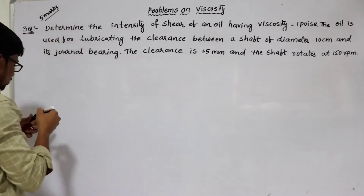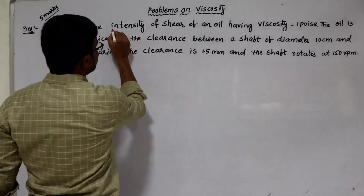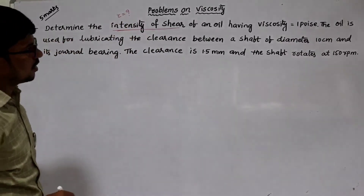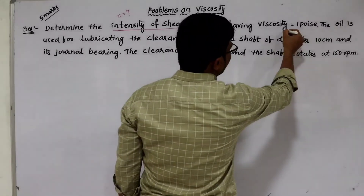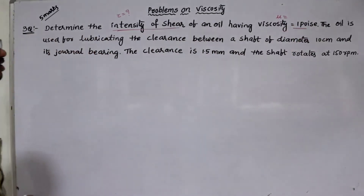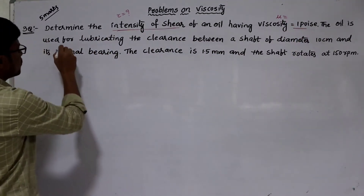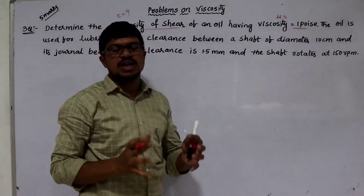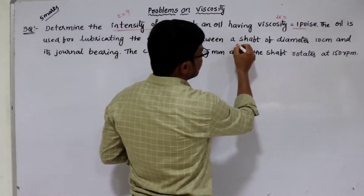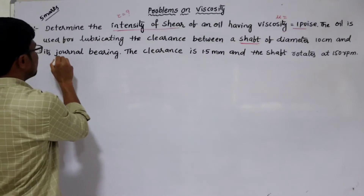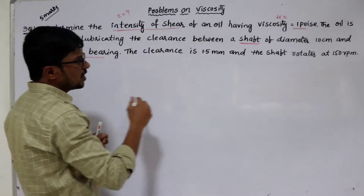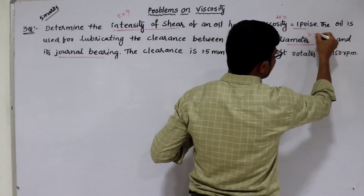Let us see the question: Determine the intensity of shear stress — that means what shear stress we need to calculate — of an oil having viscosity mu equal to a given value in CGS units. The oil is used for lubricating the clearance (meaning the gap) between a shaft and journal bearing. The shaft diameter is given as capital D equal to 10 centimeters.